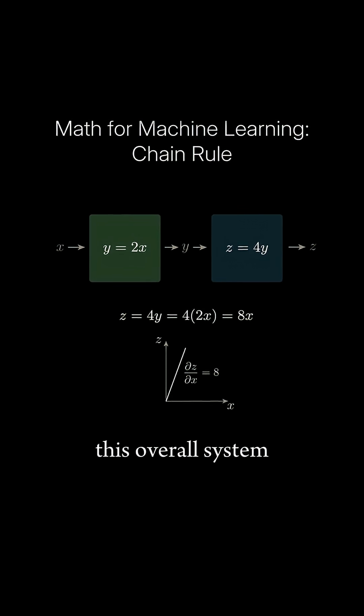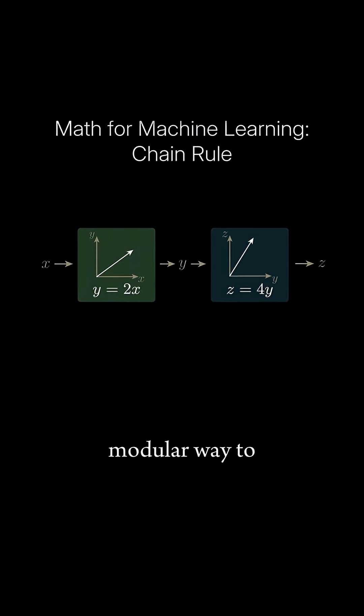The slope or derivative of this overall system equation is 8. Now, a more modular way to reach the same answer is to compute the derivative of each block individually. Computing the slope of our first block, dy dx equals 2, and the slope of our second block, dz dy equals 4.